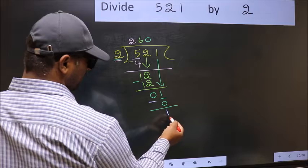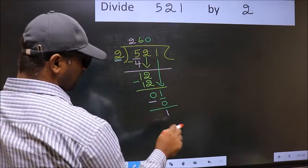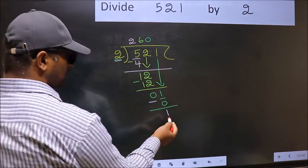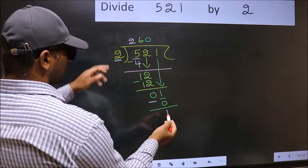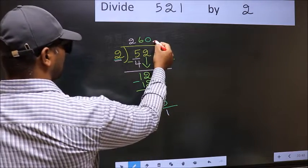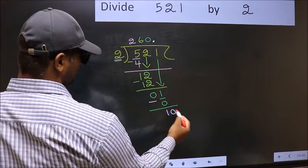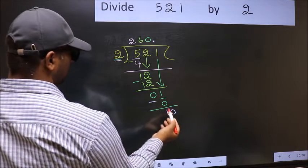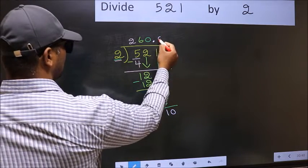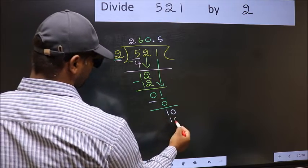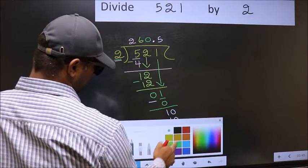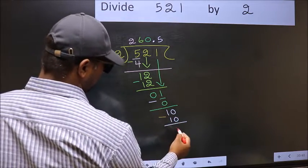Over here, we did not bring any number down. And also 1 is smaller than 2. So now you can put a dot and take 0. So 10. When do we get 10 in 2 table? 2, 5, 10. Now you subtract. 10 minus 10, 0.